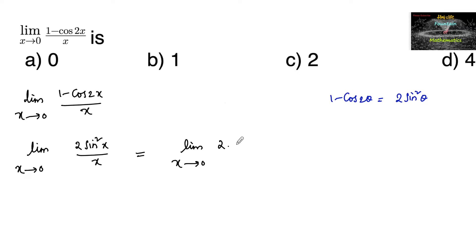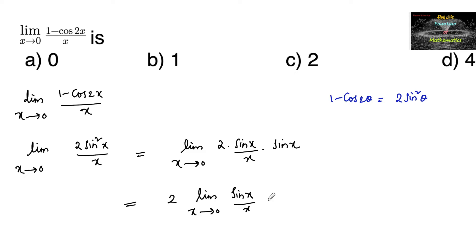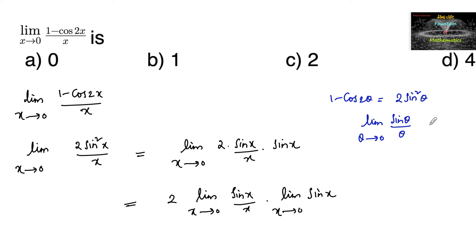This can be written as limit x tends to 0: 2 × (sinx / x) × sinx. So we can write 2 times, by algebra of limits: limit x tends to 0 of (sinx / x) into limit x tends to 0 of sinx. We know the property that limit θ tends to 0 of (sinθ / θ) = 1 when θ is in radians.